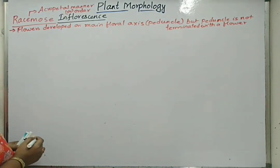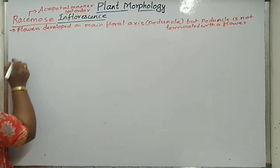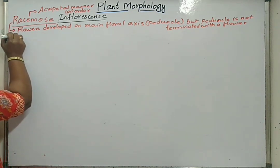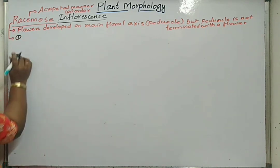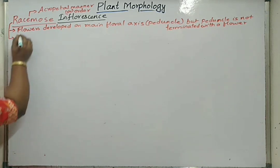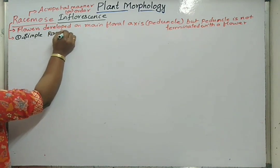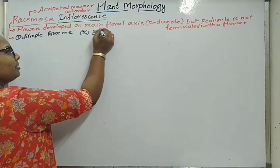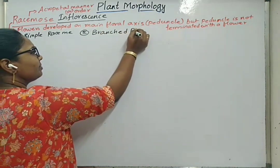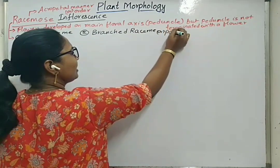The older flowers are at the base region and the young flowers are near the apical region. Under racimose inflorescence, the types are: first, simple raceme; second, branched raceme or panicle type of inflorescence.